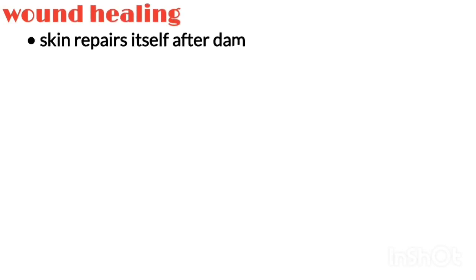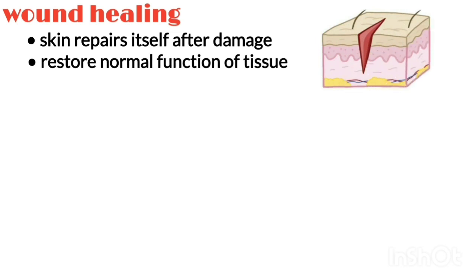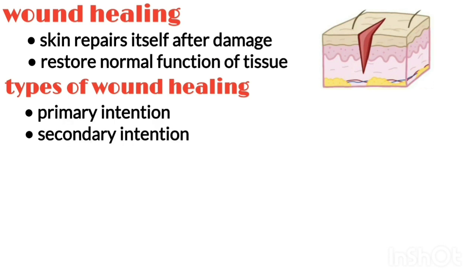Cutaneous wound healing is a process by which the skin repairs itself after damage. It is important in restoring normal function to the tissue. There are two main types of healing: primary intention and secondary intention.